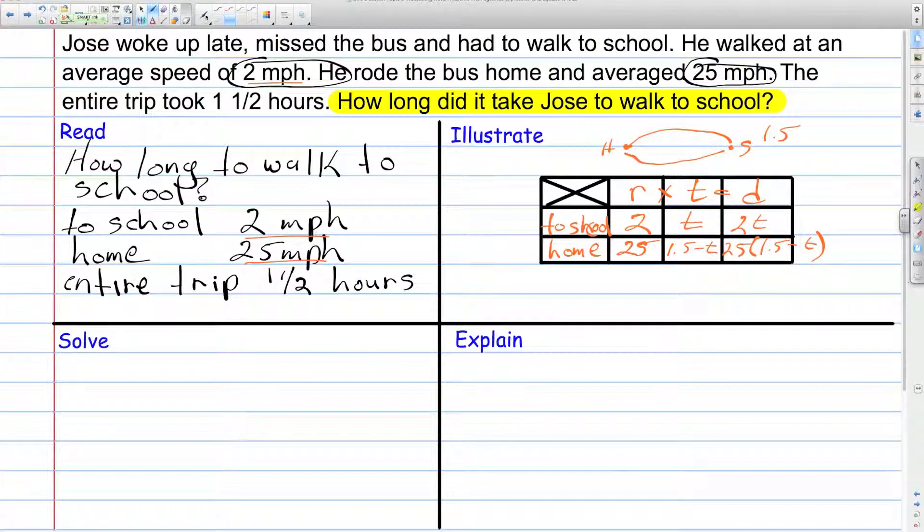So, these expressions in the distance column, right here and right here, those represent the distance from the school to home and vice versa. The round trip. And those two things are equal. The distance is equal to the distance here. So, the equation we write was going to be 25 times the quantity 1.5 minus t. And that's going to be equal to 2t. So, in our illustrate portion, I have my table. Here's a little diagram to show the round trip travel. And here's my equation because the two distances are equal.